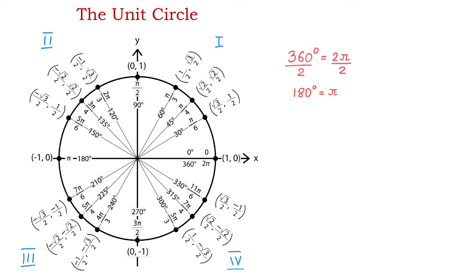If we divide the equation again by 2, we get that 90 degrees is the same as π over 2, and indeed on the circle we see that 90 degrees equals π over 2. All these fractions are obtained by dividing 2π into smaller angles. In quadrant 1, 30 degrees equals π over 6 radians, 45 degrees equals π over 4 radians, and 60 degrees equals π over 3 radians.